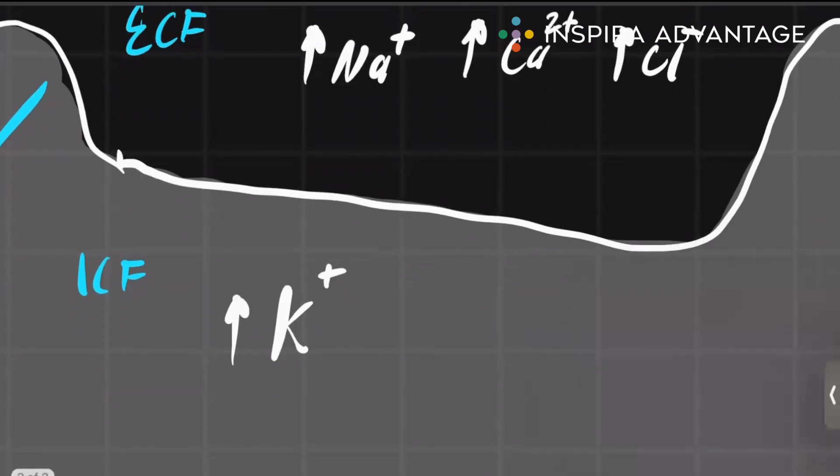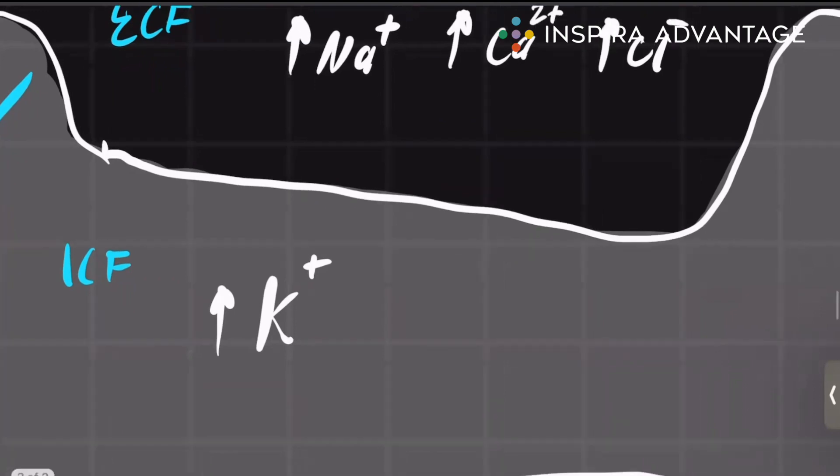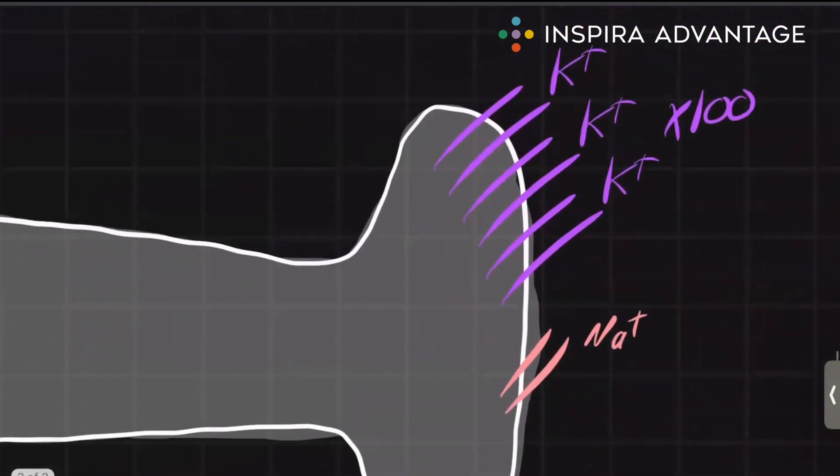Now the two most important leak channels you will find in a neuron are sodium and potassium channels. However, there are many times more potassium channels than there are sodium channels.